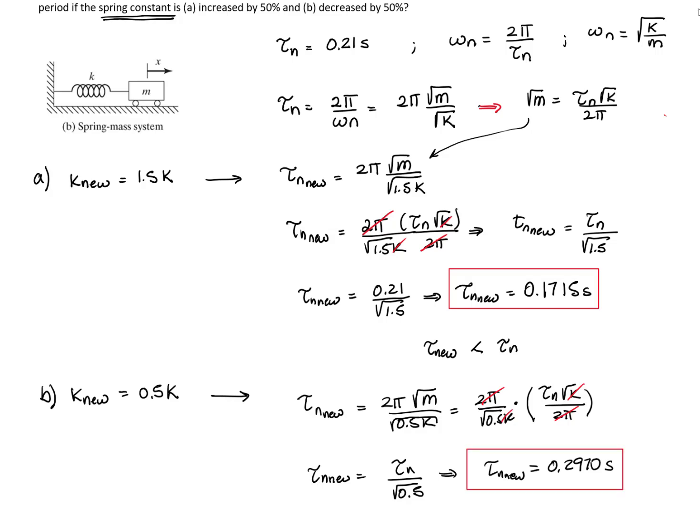So that gives me the conclusion that when K increases, the period decreases. And here the K decreases and the period increases.